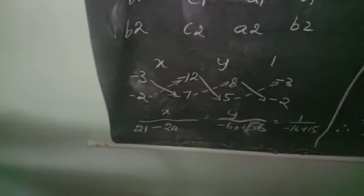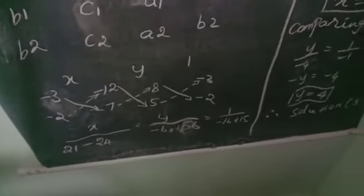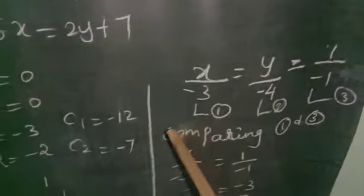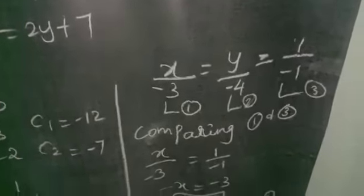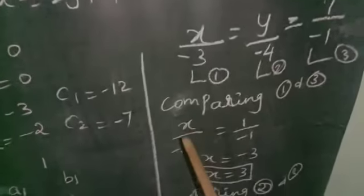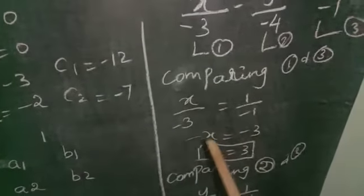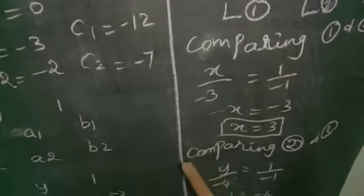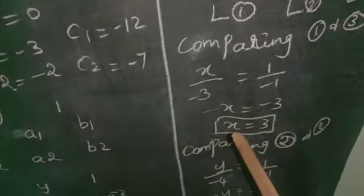x divided by minus 3, is equal to y divided by minus 4, is equal to 1 divided by minus 16 plus 15, which is minus 1. So: x divided by minus 3 is equal to y divided by minus 4 is equal to 1 divided by minus 1. Comparing the first and third terms: x divided by minus 3 is equal to 1 divided by minus 1. Using cross multiplication, minus x is equal to minus 3. Cancelling the minus on both sides, we get x is equal to 3.